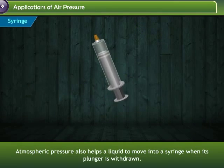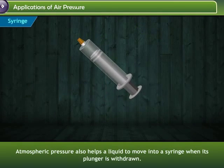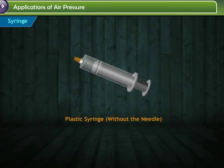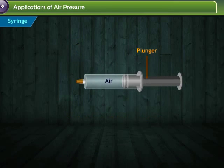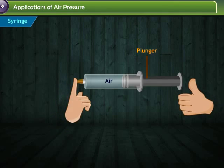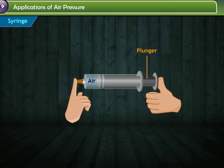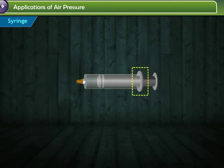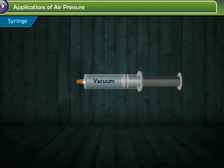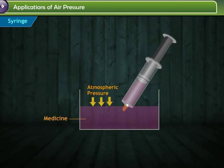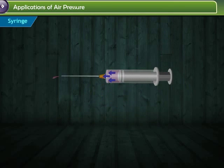Atmospheric pressure also helps a liquid to move into a syringe when its plunger is withdrawn. Take a plastic syringe without the needle. Pull on the plunger to fill the syringe with air. Put your finger over the end to seal the opening, then put your thumb on the plunger and squeeze. You will see that as you apply pressure, air is squeezed into a smaller space — the harder you squeeze, the smaller the gas gets. The plastic on the end of the plunger makes an air-tight seal with the tube. So when the plunger is pulled back, a vacuum is created inside the tube. If blood or medicine is present on the outside of the needle, it gets pulled into the empty space by the vacuum. When you press the plunger back down, it pushes the liquid back out through the hole at the end of the needle.